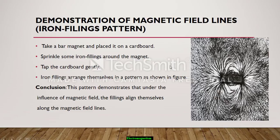So how can we see these magnetic field lines? We will do this experiment. This is a very simple experiment which can be done at your home. Take a bar magnet or a simple magnet and place it on a cardboard.